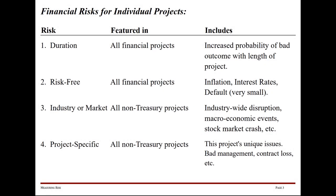We began the chapter by looking at financial risks for individual projects, and we saw that duration risk occurs in all financial projects. That includes our increased probability of a bad outcome occurring more and more frequently as the length of the project increases.